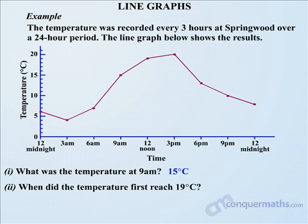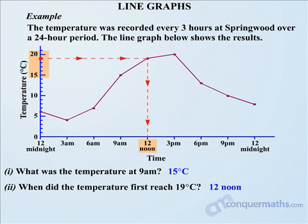When did the temperature first reach 19 degrees? Along the temperature axis we can see that 15 and 20 are marked, and counting the units between those we find that 19 is right there. Measuring across from 19 and then down, we can see that it occurs at 12 noon.